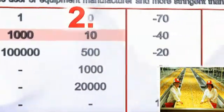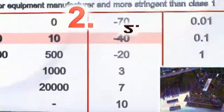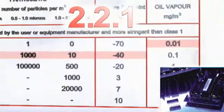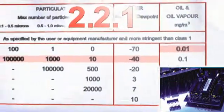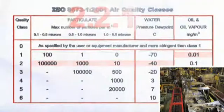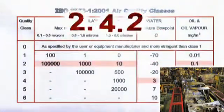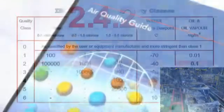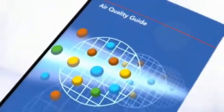Electronics component manufacturers have a similar standard for their sensitive processes, requiring instrument class air at 2-2-1 also. General industrial grade air may be a 2-4-2. An air quality guide to help determine the proper air quality and how to control it for your application is available through your Ingersoll Rand Air System Engineer.